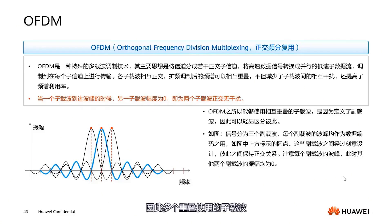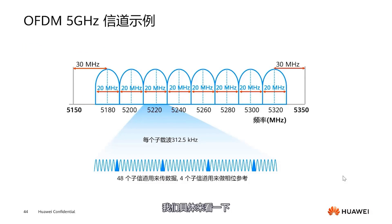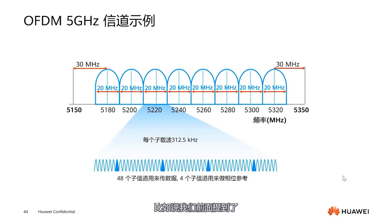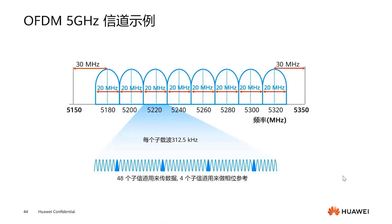Thus, multiple overlapping sub-carriers can transmit data simultaneously, and since they are orthogonal to each other, there is no interference — this is OFDM technology. Let's look specifically at the application of OFDM technology in the 5 GHz spectrum. As mentioned earlier, there are a total of 52 channels or sub-carriers, each sub-carrier is 312.5 kHz. Here we see 48 channels are used for data transmission and 4 channels are used for phase reference, not for data transmission. This is the basic scenario of OFDM technology.